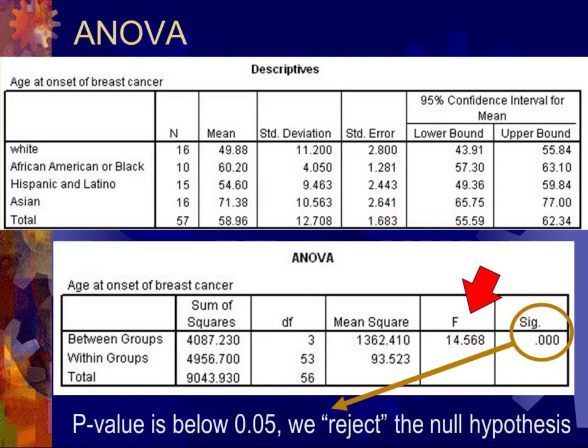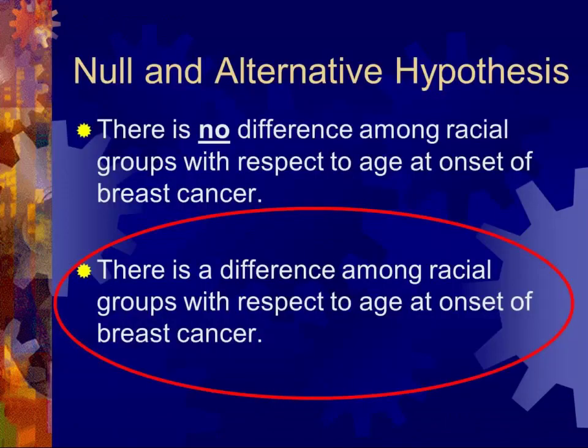When you do an ANOVA test on these sets of information, a number comes out and from that you get a p-value. Because the p-value in this case is less than 0.0001, we reject the null hypothesis — there is a difference among racial groups with respect to age at onset of breast cancer. However, doing an ANOVA test simply tells you the findings are not likely to be random; it doesn't tell you which of the categories actually differs from the others.